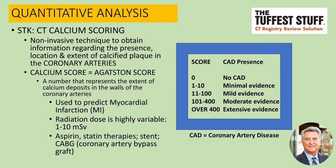CT calcium scoring examinations, or evaluations, results in a calcium score referred to as an Agatston score. That Agatston score is a number that represents the extent of calcium deposits in the walls of the coronary arteries. And when we look at the chart to the right, we see what that Agatston score is all about.